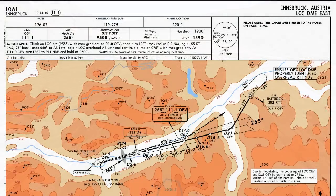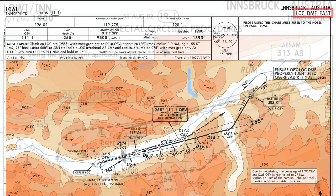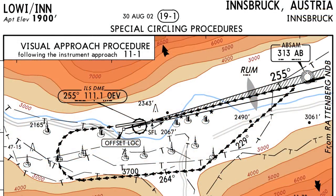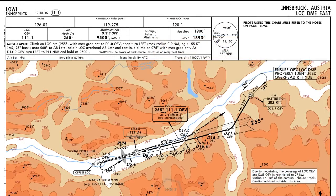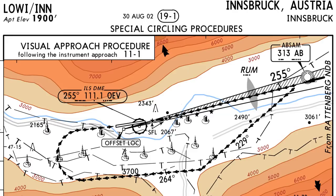Although there are approaches from both the east and the west into Innsbruck, today we're going to do the localizer DME east approach. In addition to the localizer approach, we'll also do the circle to land procedure for runway 8. So this video is going to be a localizer DME east approach with a circle to land runway 8.